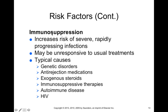Immunosuppression is a risk factor. The elderly are immunosuppressed, and there are different causes. Certain genetic disorders can lead to immunosuppression. Anti-rejection medications taken after receiving a tissue or organ transplant often suppress the immune system to prevent rejection, but this itself puts you at risk for other infections. Exposure to steroids for autoimmune disease, immunosuppressive therapies, and autoimmune disease itself can also put you at risk, as well as HIV, which specifically targets immune cells.